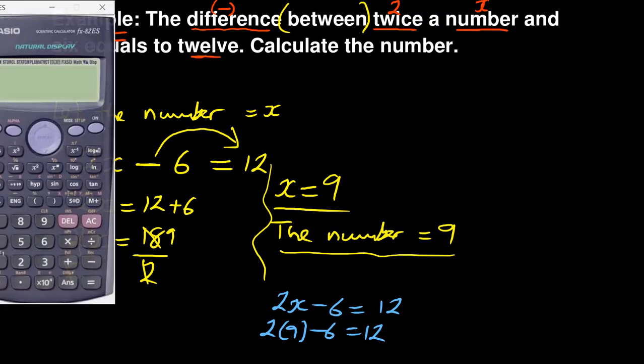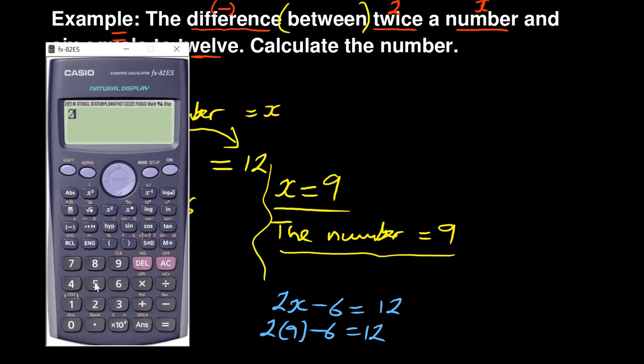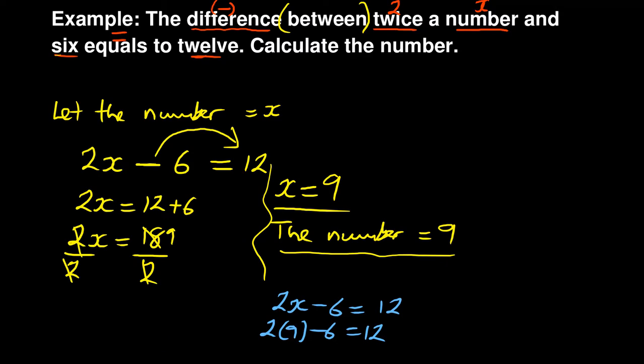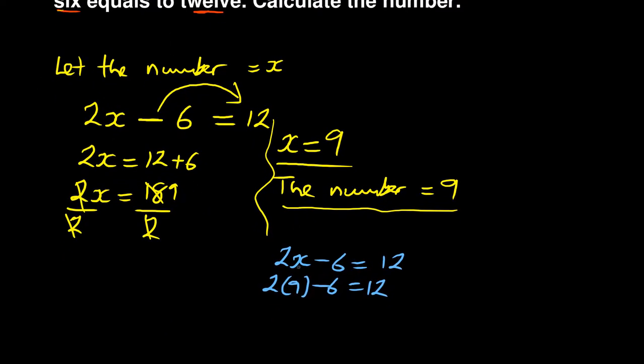Check with the calculator. Now the left-hand side, you're saying 2 times 9 minus 6 is 12. So what you're having: you're having 12, 12 is equal to 12.